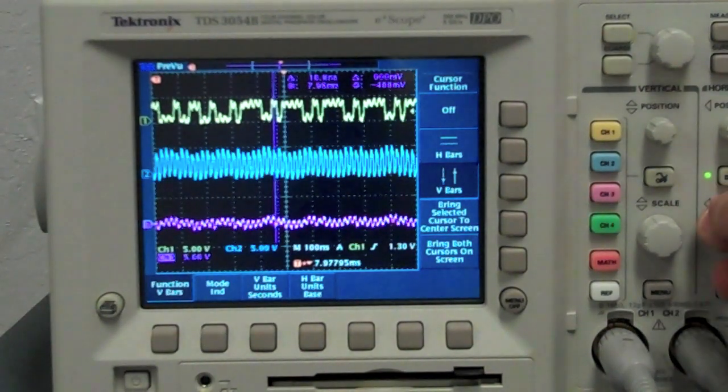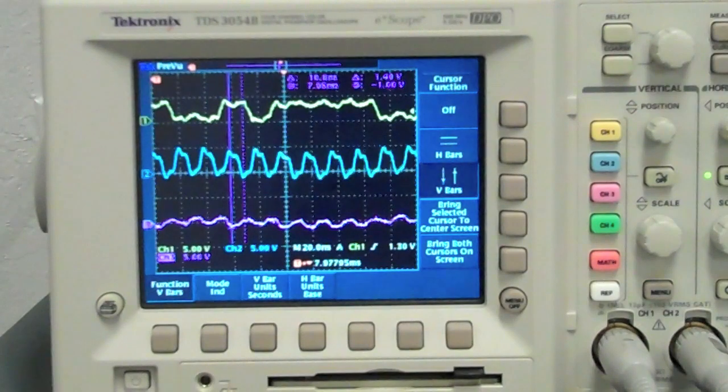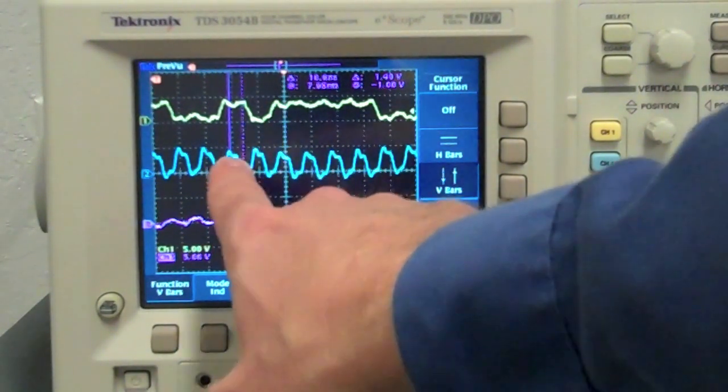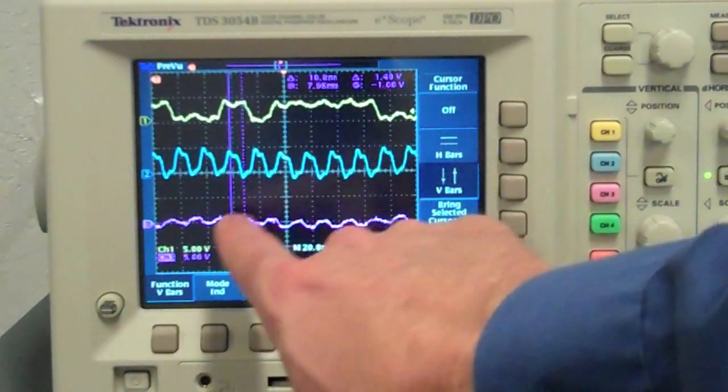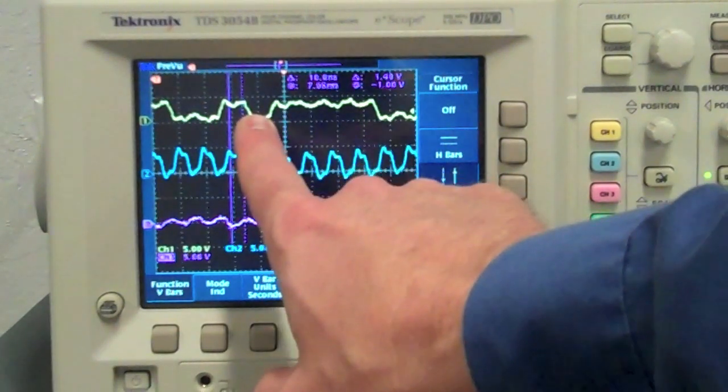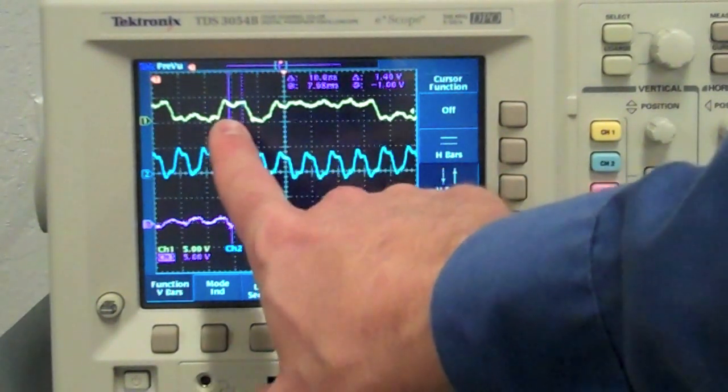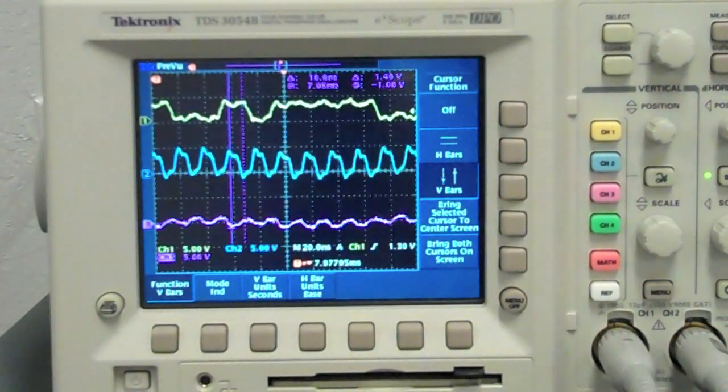If I zoom in a little bit to make it easier to see what's going on, now we're at 20 nanoseconds per division, and you can see between these purple cursor lines, here's the clock. As the clock falls, the processor will see a value of one. In the next pulse, as the clock falls, it'll see a value of zero. So from left to right, you would see a one, zero, one, one, one, and so on. That's the basic principle behind the SPI protocol.